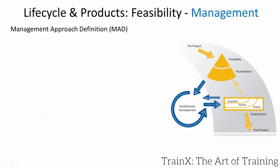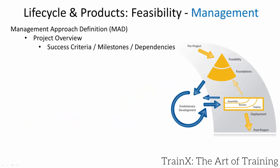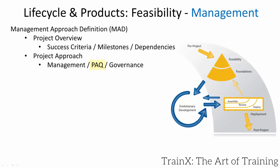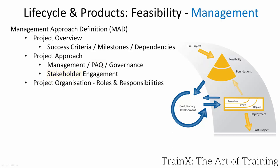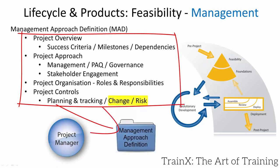The management approach definition documents success criteria, reporting milestones, and any inter-project dependencies. Governance may be rigorous or relaxed. The project approach questionnaire, or PAQ, helps determine the organisation's understanding and acceptance of Agile PM's usage. Communication requirements to various stakeholders are described here, as are roles and responsibilities, along with any variations from Agile PM's recommendations. Stipulations on how to manage risk, change, and exceptional circumstances are also described.